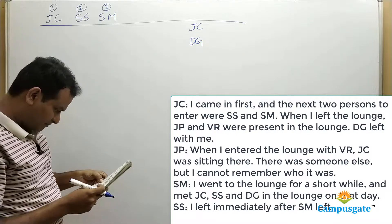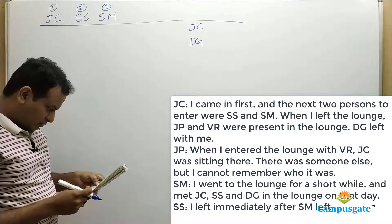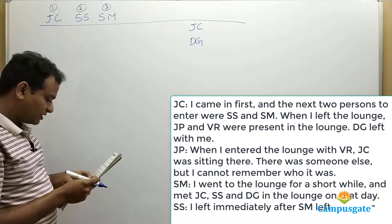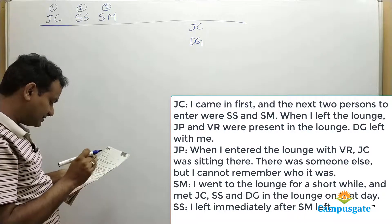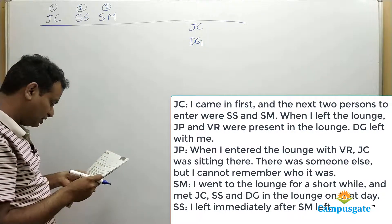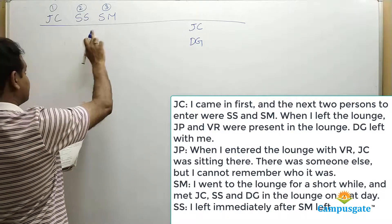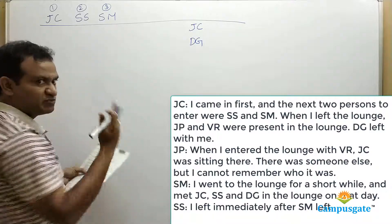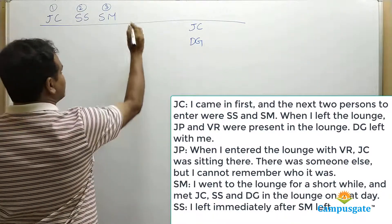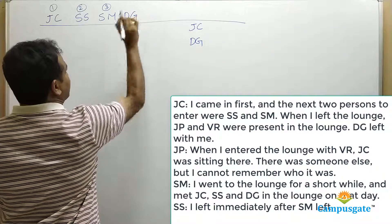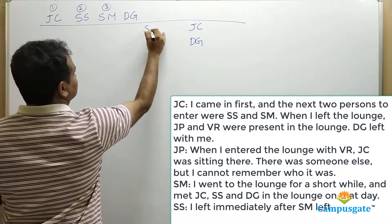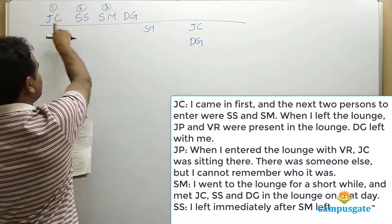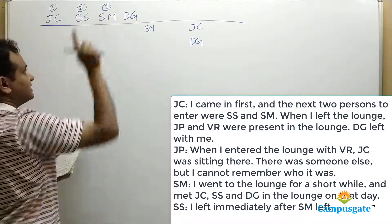Looking at the third clue, SM says: 'I went to the lounge for a short while and met JC, SS and DG.' That means DG must have arrived before SM left. So tentatively, DG arrives here and SM leaves after that. SM met all three people: JC, SS and DG.